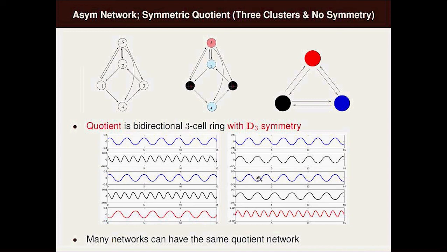To answer a question that Thomas was asking in Abu's talk, you can have many networks that have the same quotient network. For example, I think there are 14, something like that, different four and five node networks that have a quotient network which is the bidirectional ring. They have different dynamics, so that's an interesting feature.